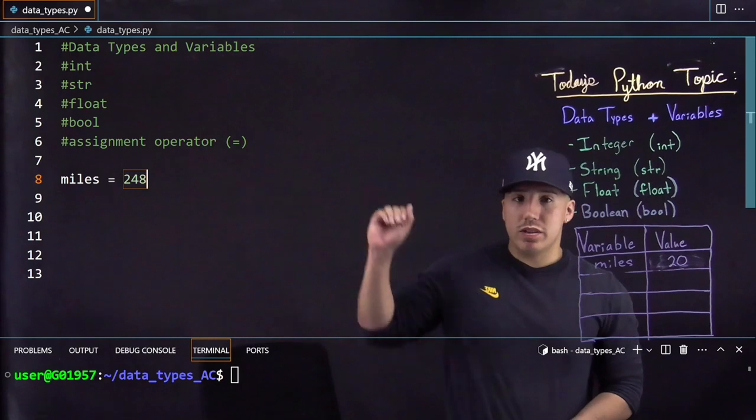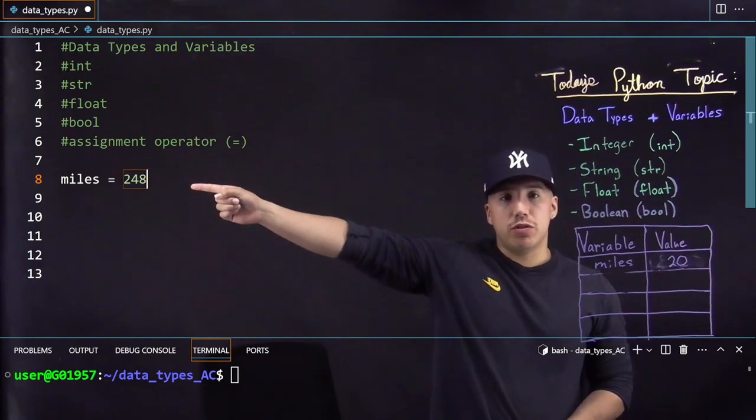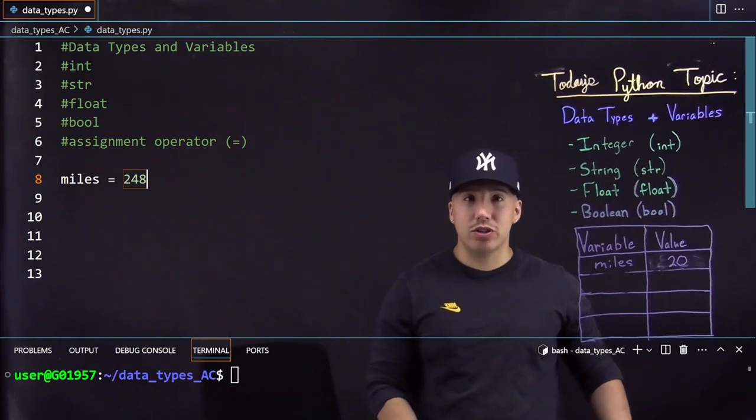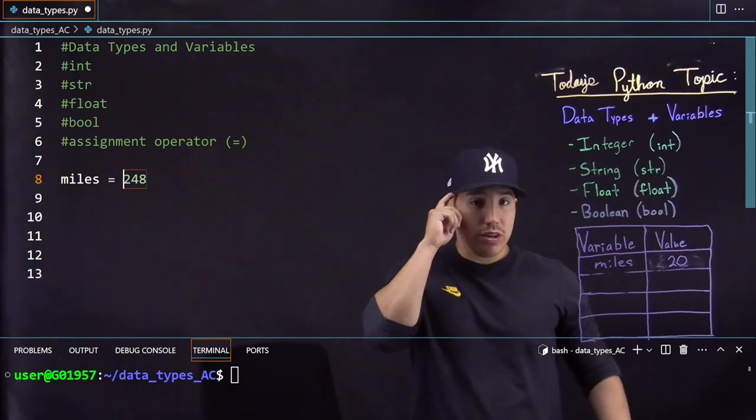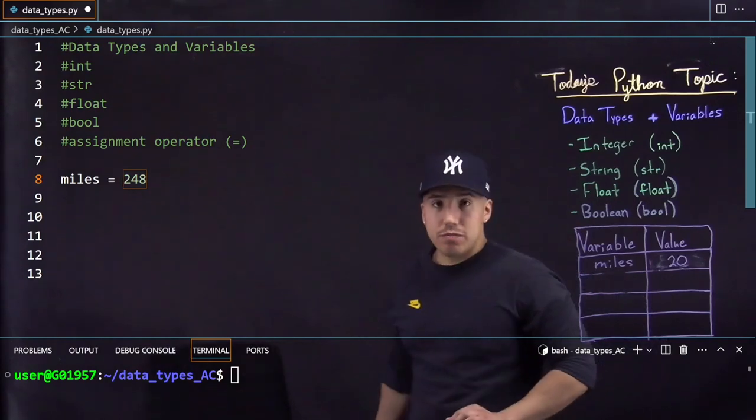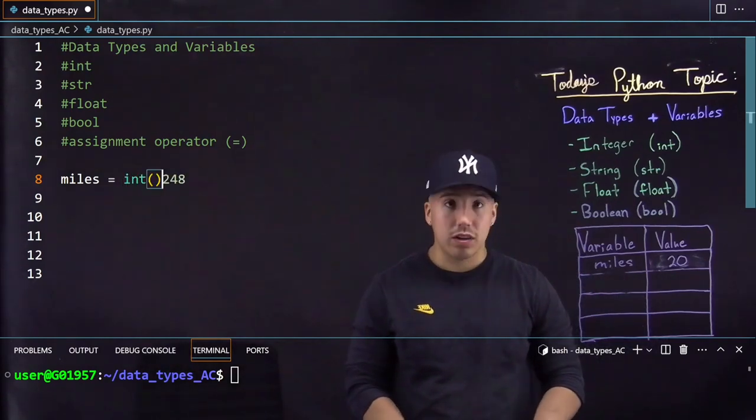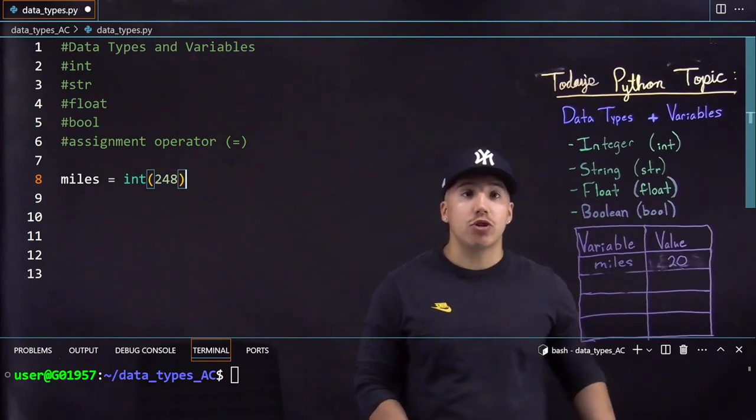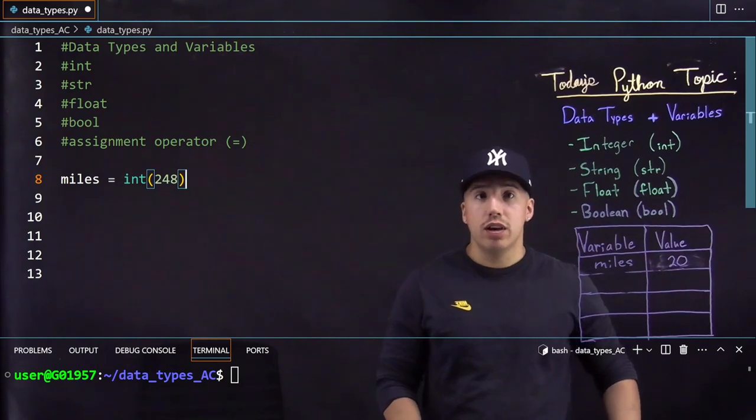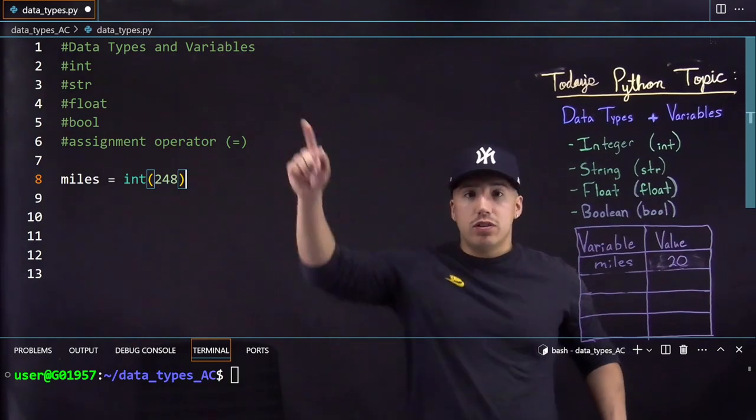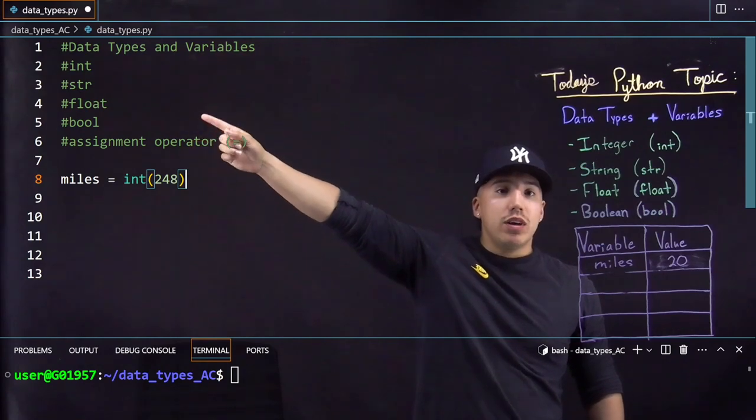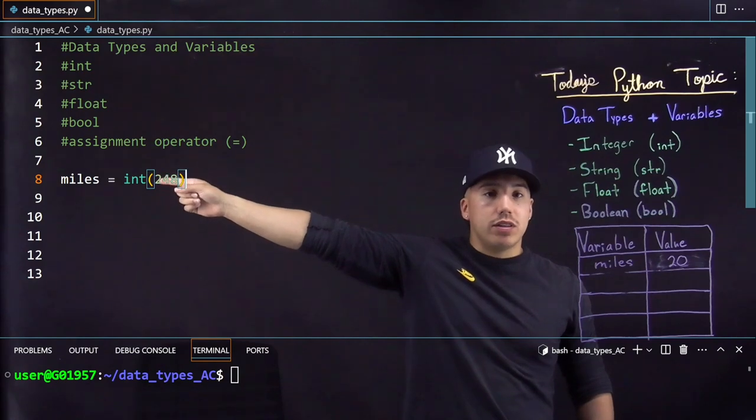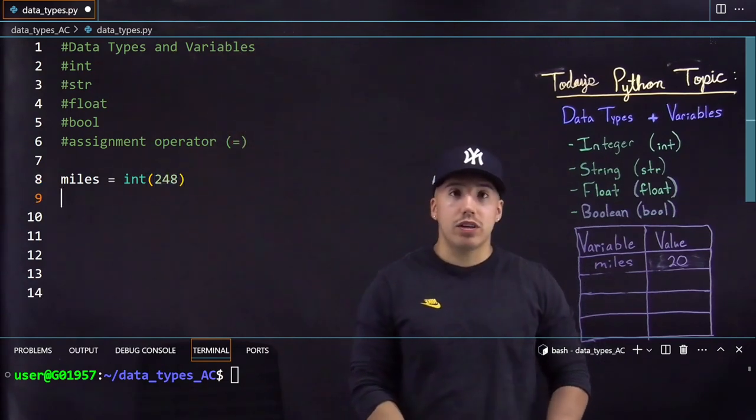Another thing to keep note of is I declared miles to be 248 the integer this way assuming that the computer was going to pick up 248 as an integer. But the correct way to actually make sure that it is an integer is by putting int and putting a number in the parentheses. So now for sure miles is an integer of 248. And this works exactly the same way with all these. As you can see we got integer string float bool and that is exactly why I wrote them this way because the computer actually knows what int is. So that's a good thing to keep note of.